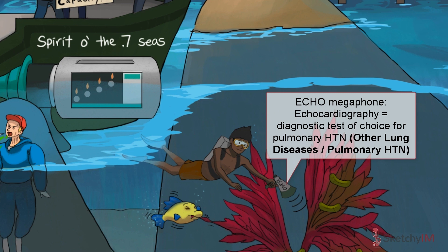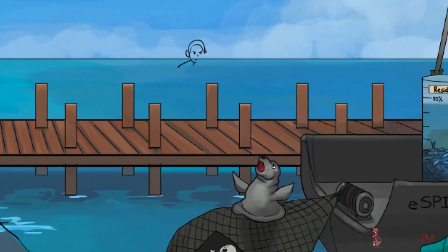An echo, represented by our recurring Sketchy symbol, the echo megaphone, can estimate pulmonary artery pressures and see if right ventricular dysfunction is present. For more details on the presentation and management of pulmonary hypertension, check out our dedicated sketch on it later in this unit.